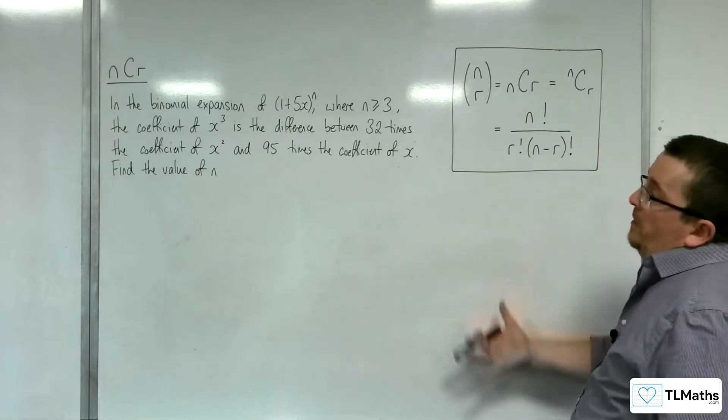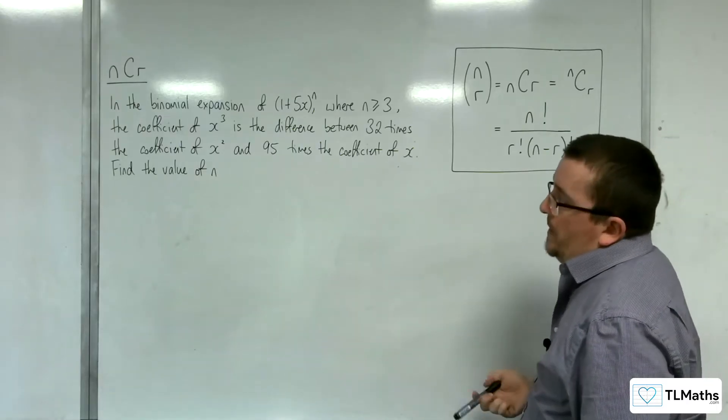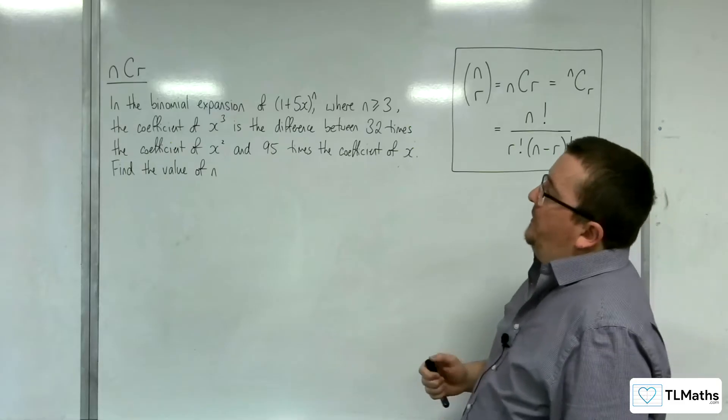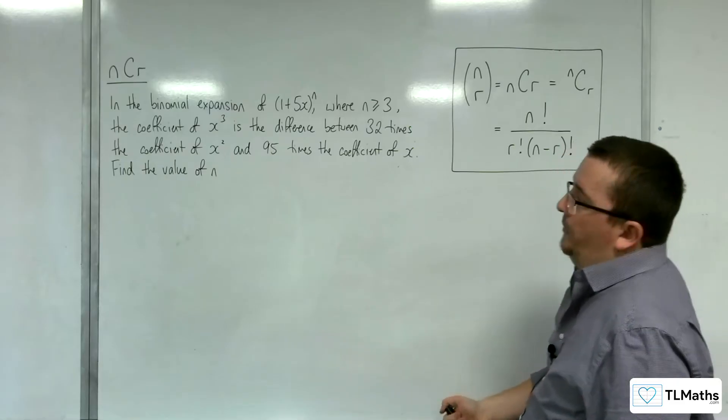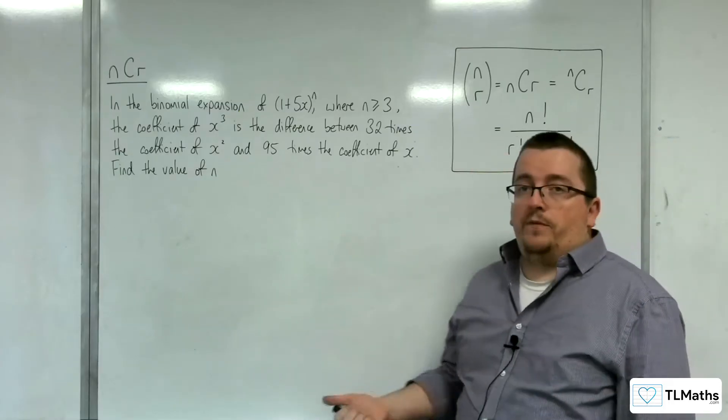In this problem, we've got a binomial expansion of 1 plus 5x to the n, where n is greater than or equal to 3. The coefficient of x cubed is the difference between 32 times the coefficient of x squared and 95 times the coefficient of x. Find the value of n.